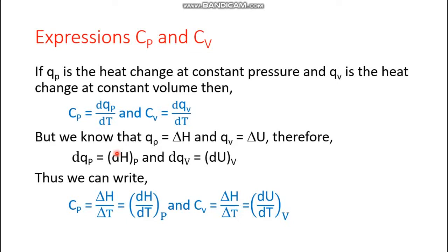If Qp is heat change at constant pressure and Qv is heat change at constant volume, then Cp = dQp/dT and Cv = dQv/dT. Since Qp corresponds to dH and Qv corresponds to dU, we can write Cp = dH/dT at constant pressure and Cv = dU/dT at constant volume.